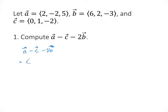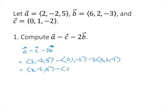So a is (2, -2, 5), c is (0, 1, -2), and b is (6, 2, -3). Using our regular order of operations, we do the multiplication first, so 2b gives us (12, 4, -6).